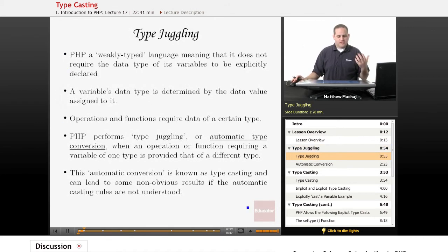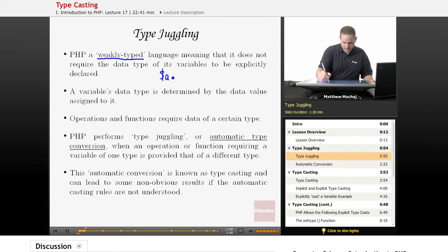So type juggling. What does that mean? Well, PHP is known as a weakly-typed language. And what that means is that when you declare a variable in PHP, you don't have to give it an explicit type. So when we do $a = 1, we're not saying to PHP that a is an integer variable. PHP determines the variable's type from its context.